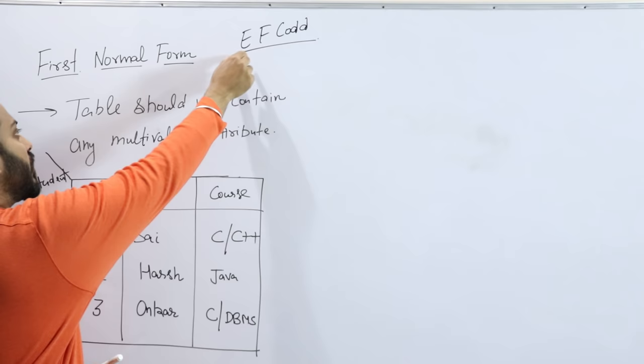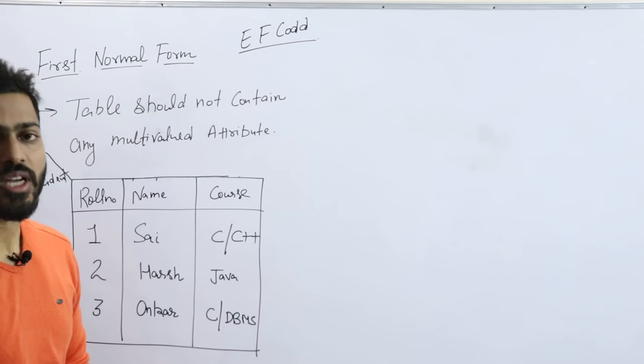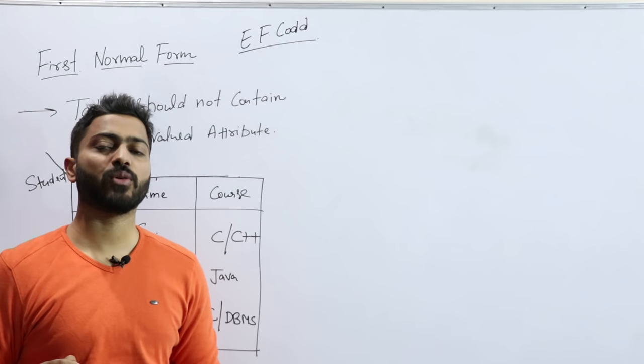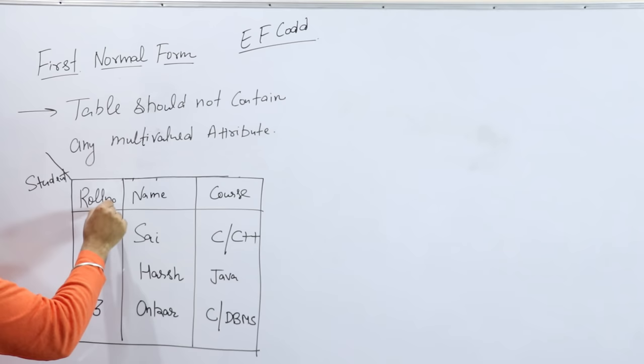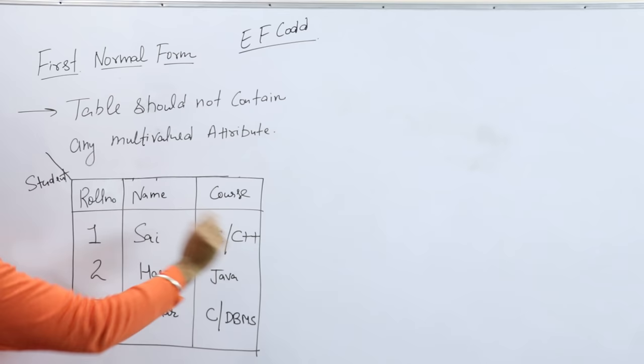The table should not contain any multi-valued attribute, meaning a table should not have an attribute where multiple values exist for a single particular person. For example, if I have a student table with role number, name, and course, and role number one has both C and C++, what is the meaning?